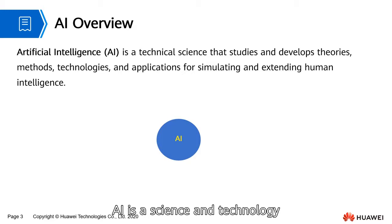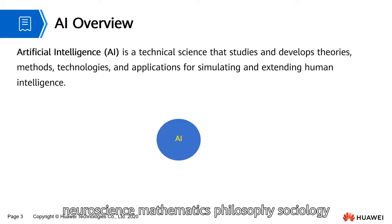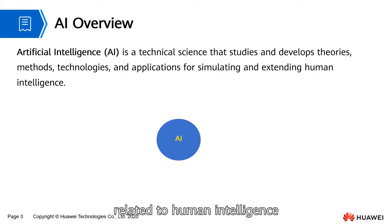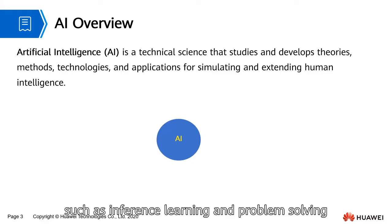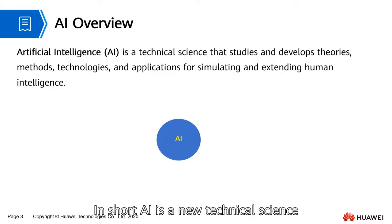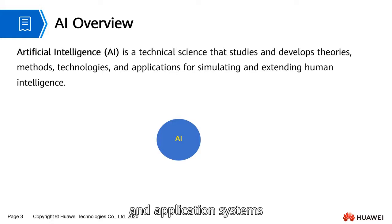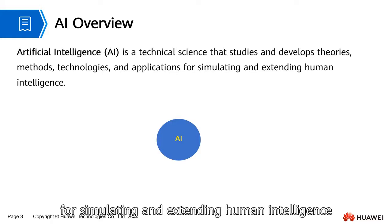AI is a science and technology based on computer science, neuroscience, mathematics, philosophy, sociology, biology, and psychology. A major driving force of AI is to develop computer functions related to human intelligence, such as inference, learning, and problem solving. In short, AI is a new technical science that studies and develops theories, methods, and application systems for simulating and extending human intelligence.